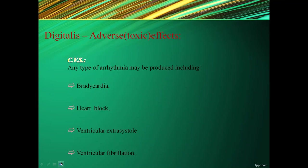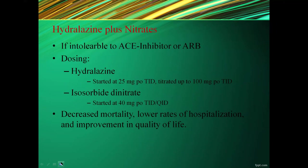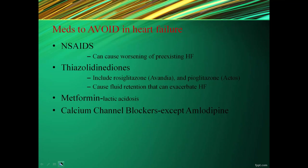Digitalis can also cause arrhythmias including bradycardia, heart block, ventricular extrasystoles, or ventricular fibrillation. Hydralazine plus isosorbide dinitrate (HISDN) is used if intolerant to ACE inhibitors or ARBs; it decreases mortality, lowers rates of hospitalization, and improves quality of life. Medicines to avoid in heart failure include NSAIDs, thiazolidinediones, metformin, and calcium channel blockers except amlodipine.